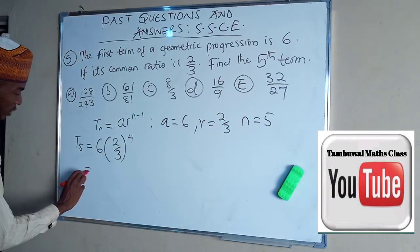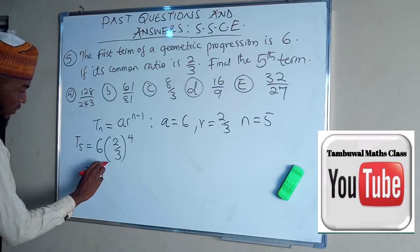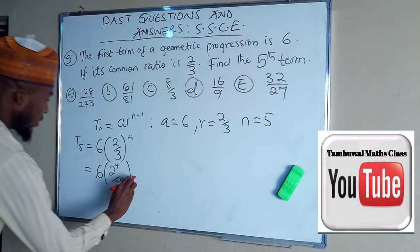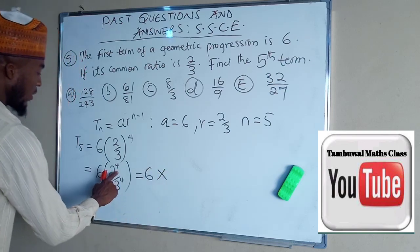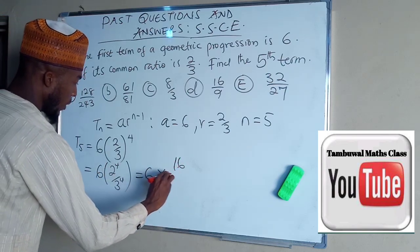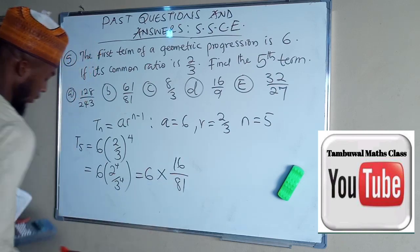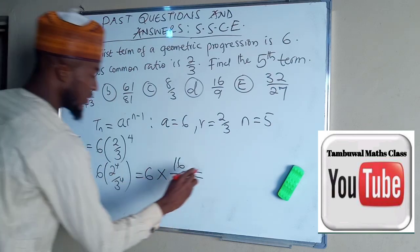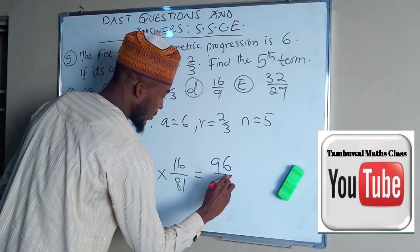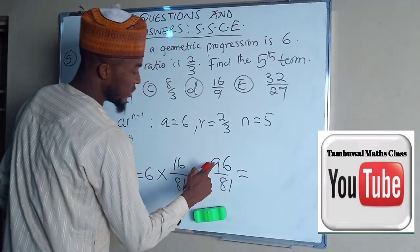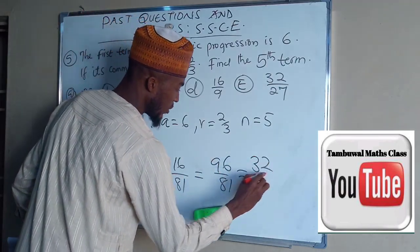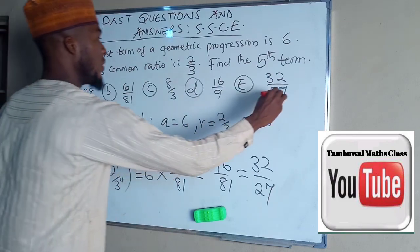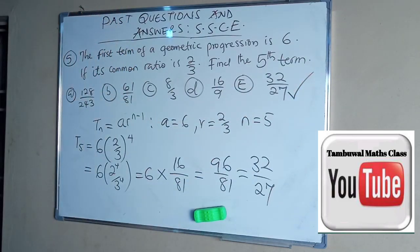So this simplifies to 6 in bracket of 2 power 4, divided by 3 power 4. This equals to 6 multiplied by, this is 16, divided by 81. And the 6 times 16 will give us 96, 96 divided by 81. 96 divided by 3 is 32, and 81 divided by 3 is 27. So the correct option is E, which is 32 divided by 27.